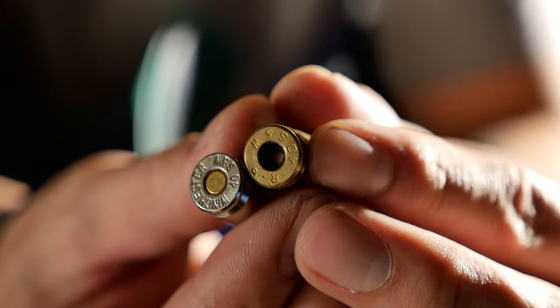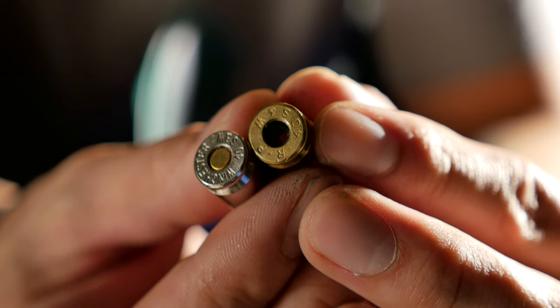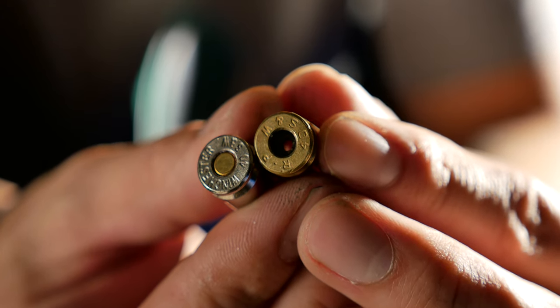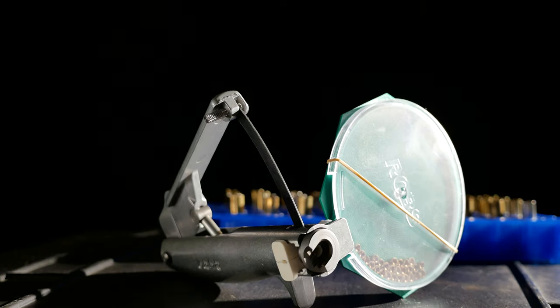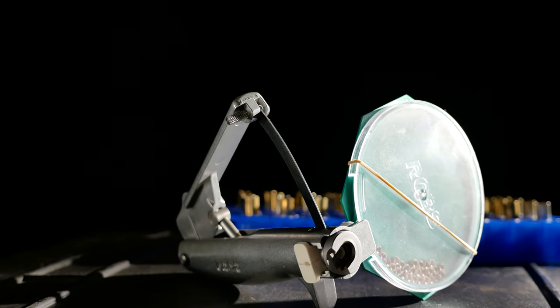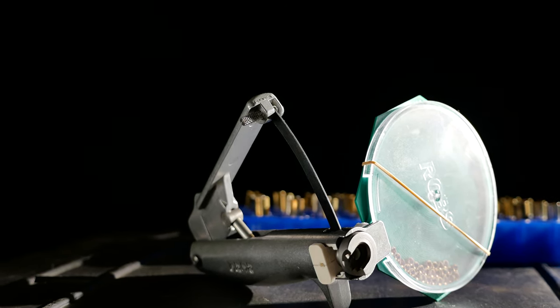To prime I'm going to be using a hand tool instead of the attachment that can be bought with this Lee press, which you can only do one at a time. So for this purpose I'm using the RCBS hand press which makes the job go by a lot faster.